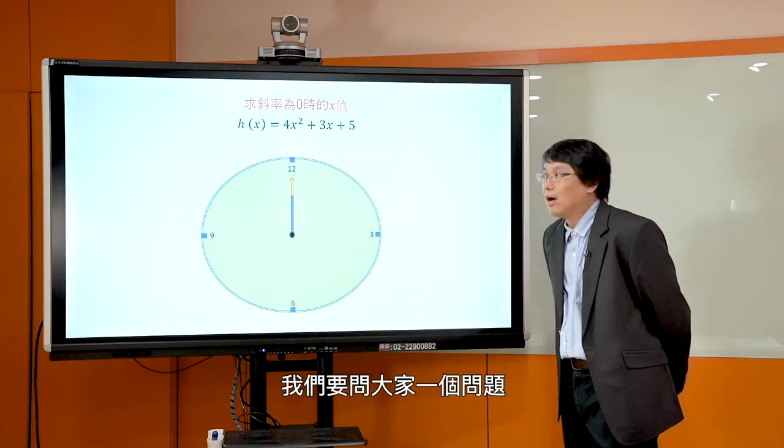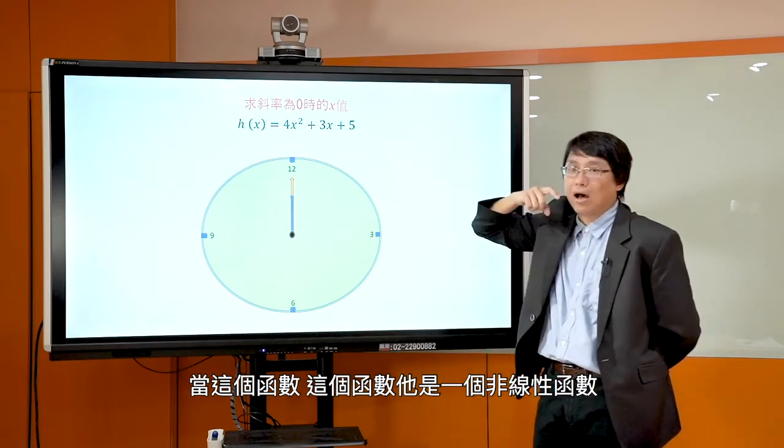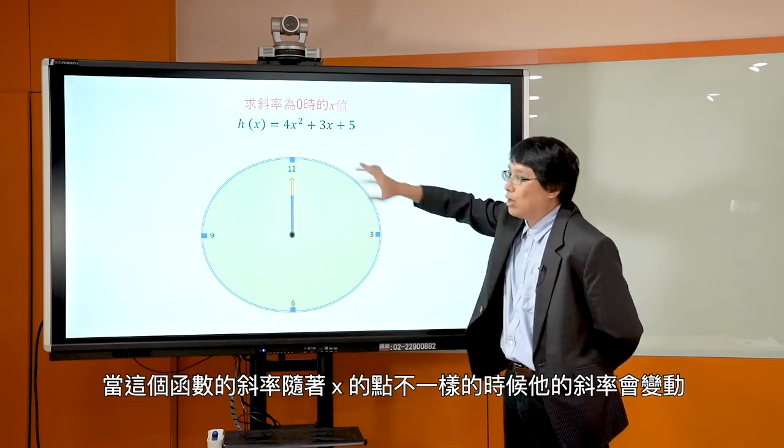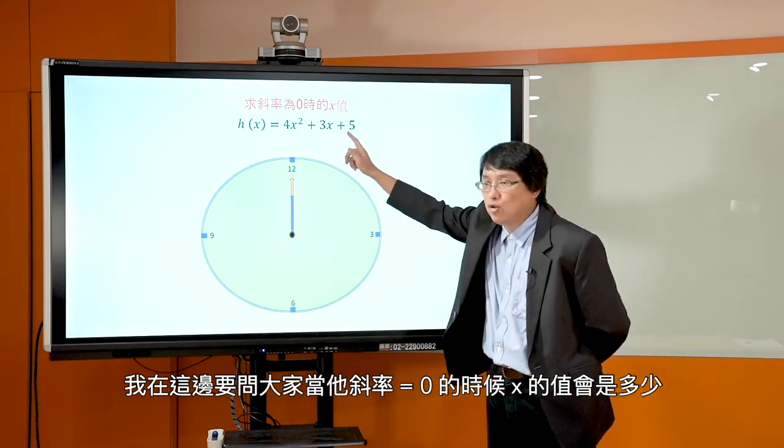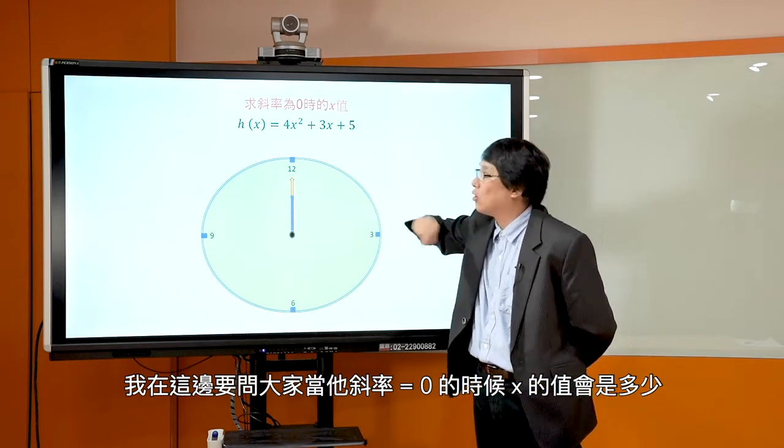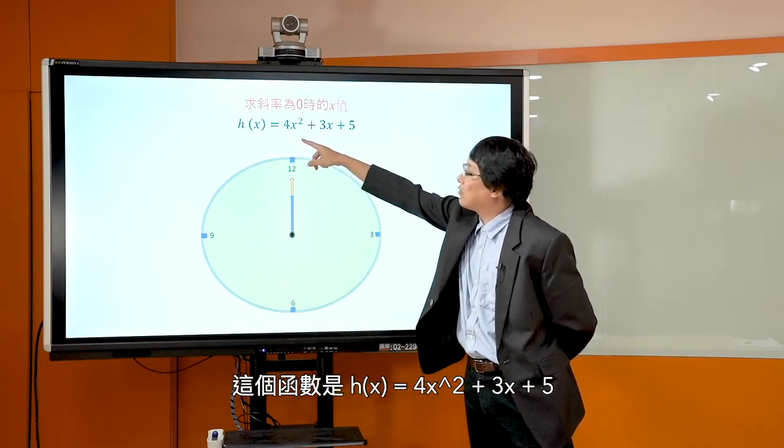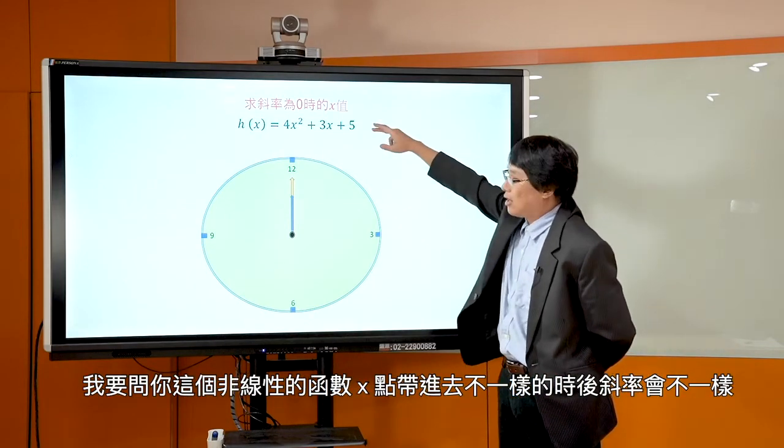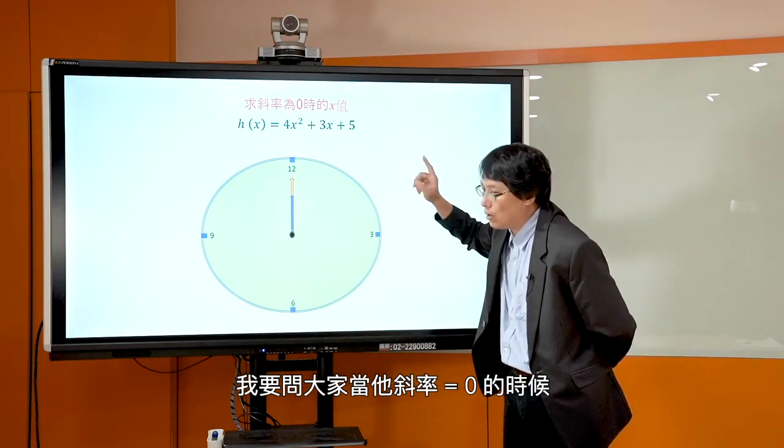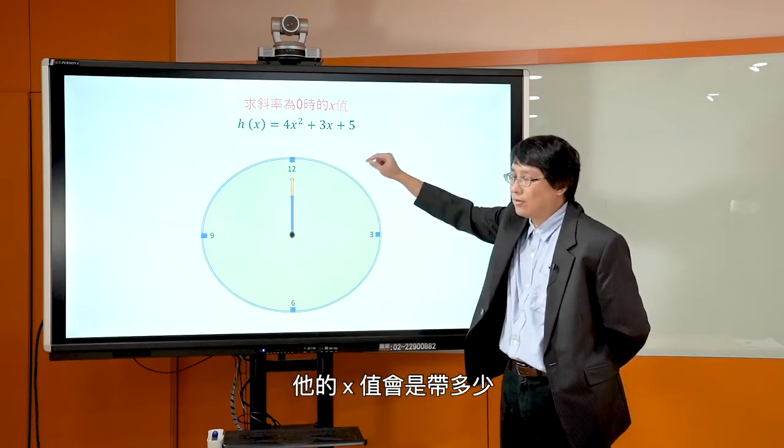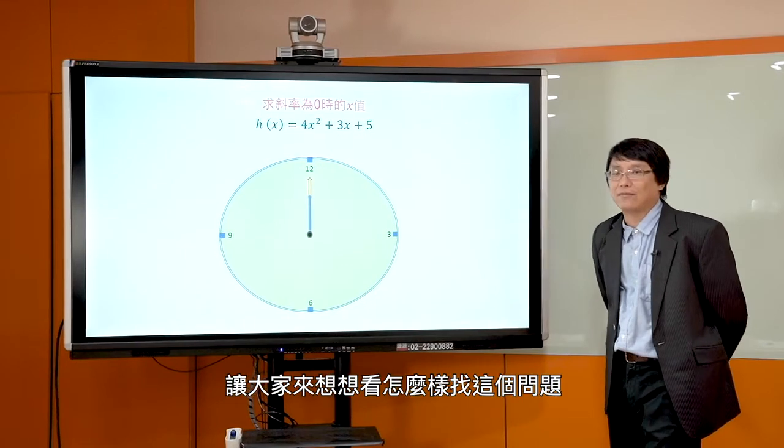好，那接下来我们再来做最后一题。这个最后一题是这个样子，请大家来看到这个函数，这个函数是 H = 4x² + 3x + 5。那在这里我们没有要叫大家求一阶导函数，我们要让大家来问大家一个问题，问说当这个函数，这个函数它是一个非线性的函数，当这个函数它的斜率随着x的点不一样的时候它的斜率会变动。那我在这边要问大家是说，那当它斜率等于0的时候，那一点的x值会是多少？听懂我的题目吗？清楚题目了吗？好，那我们一样计时一分钟，让大家来想想看怎么样找这个问题。